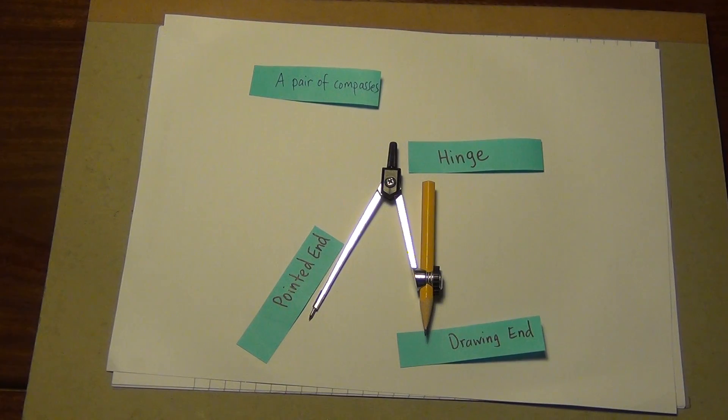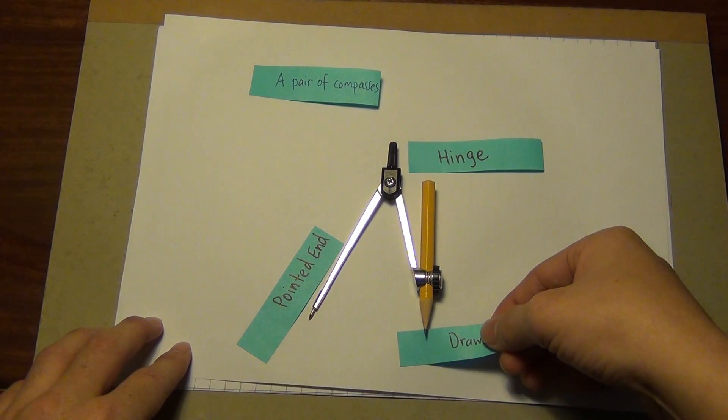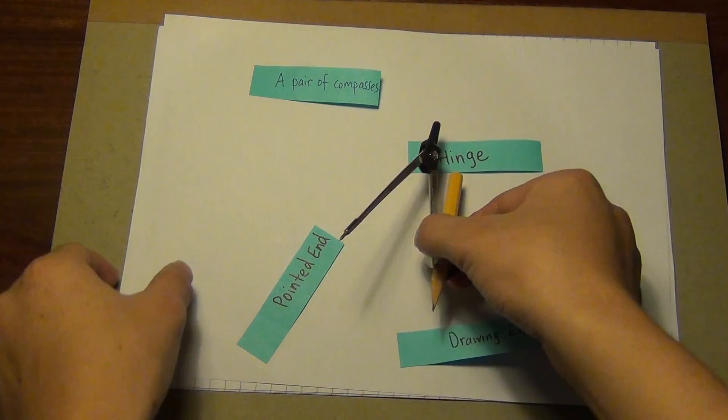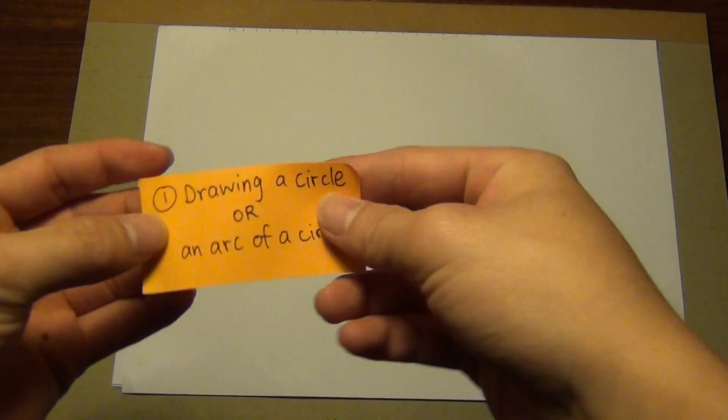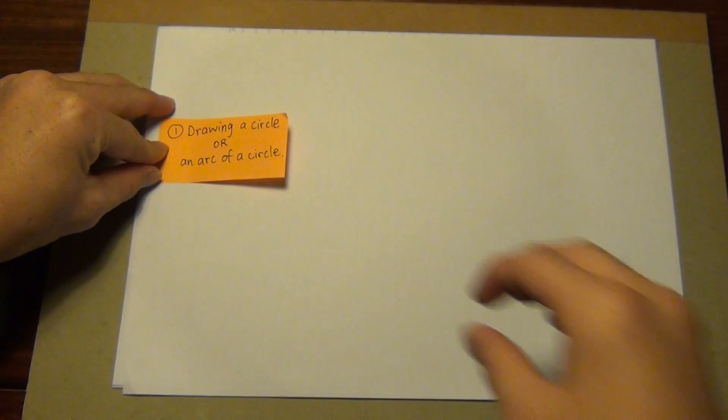With this idea of the compass, next I'm going to bring you to the purposes of a compass. There are two purposes. The first purpose would be drawing a circle or an arc of a circle.